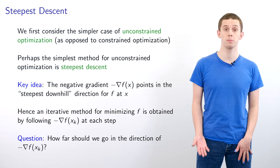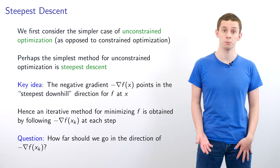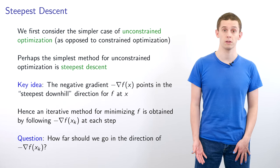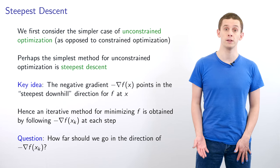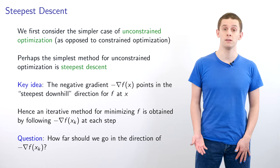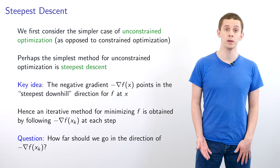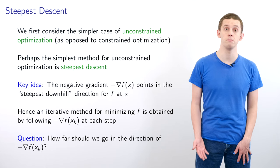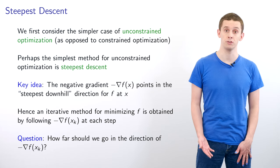These two methods are very different in character, and we're going to compare and contrast their relative advantages and disadvantages. We first consider the simpler case of unconstrained optimization, and perhaps the simplest method for unconstrained optimization is steepest descent. The key idea behind steepest descent is that the negative gradient, minus grad f of x, points in the steepest downhill direction for f at x. Therefore we could devise an iterative method for minimizing f by following minus grad f of x_k at each step k.